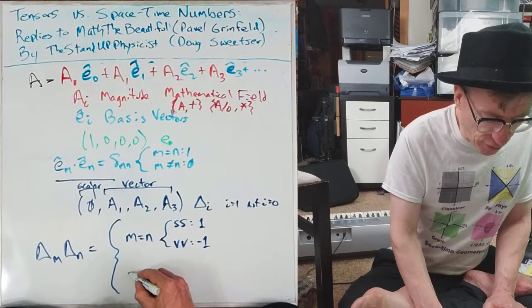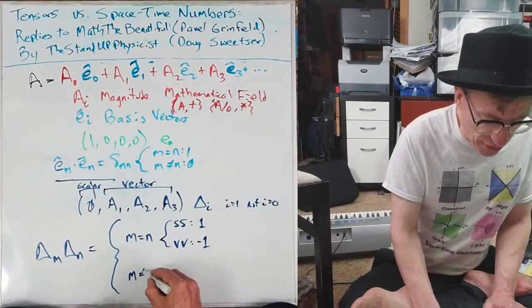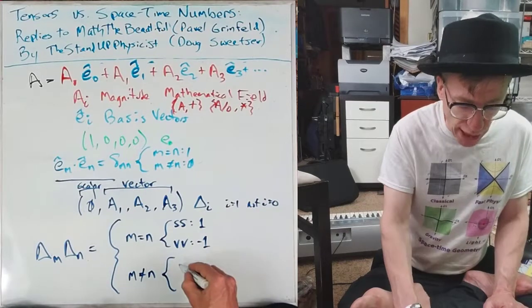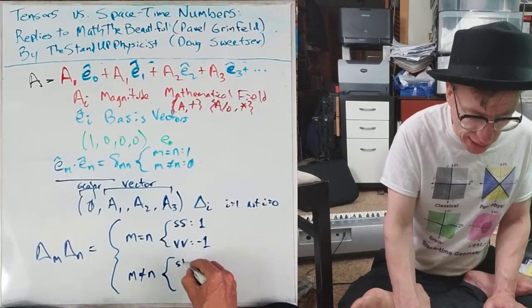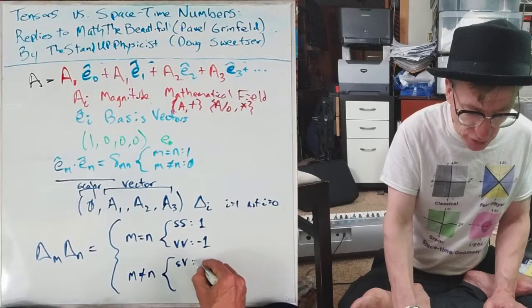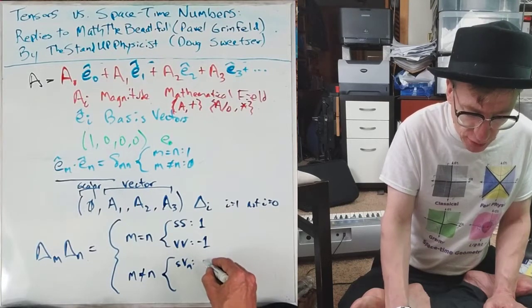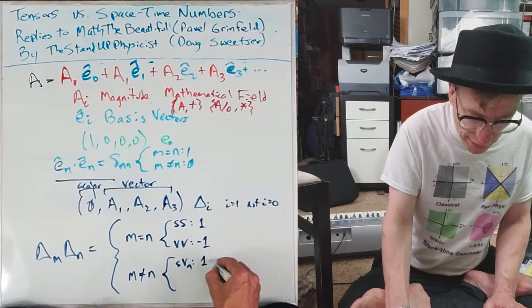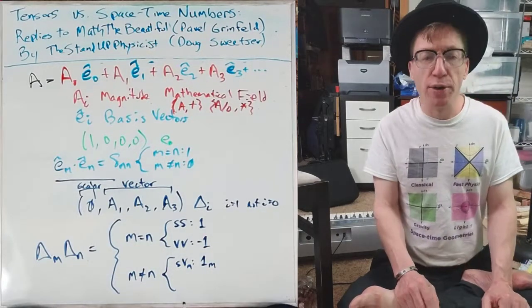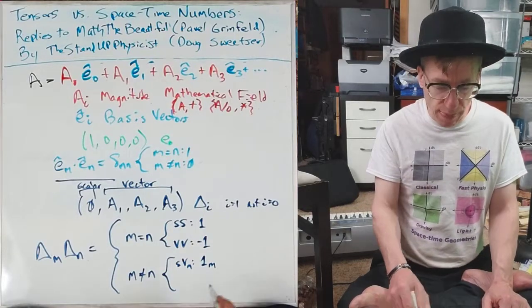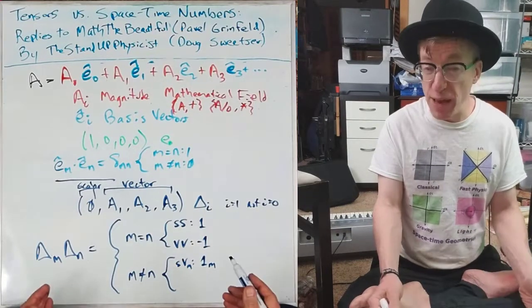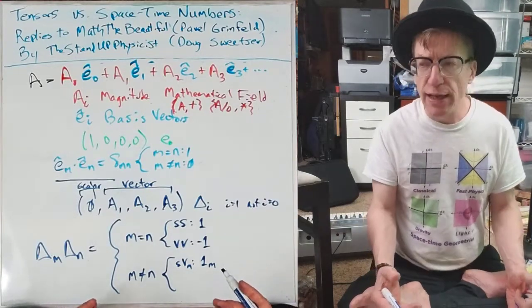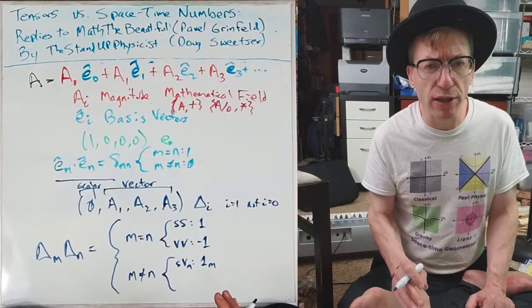Now, if we have a case where M is not equal to N, then you could have a scalar times a vector. And when you do, let's say vector M, then you end up with 1 in that 1_M, as it were. So that says what we expect. We expect the scalar times a vector to give you the vector back. Except, this is, to me, a really important quality.